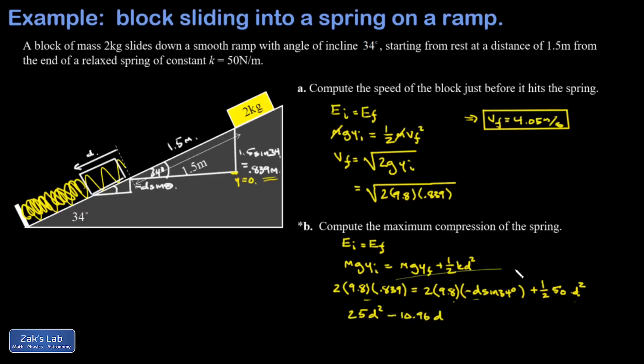And then this other term, it has to be moved over to the other side of the equation before I flip the equation around, it gets a minus sign as a result and 2 times 9.8 times 0.839 turns out to be 16.44.